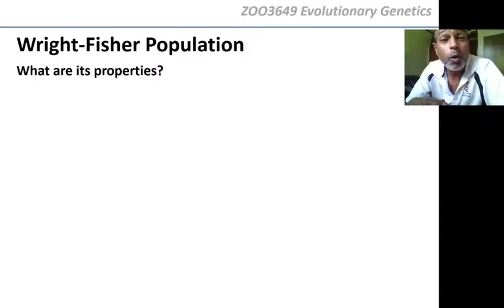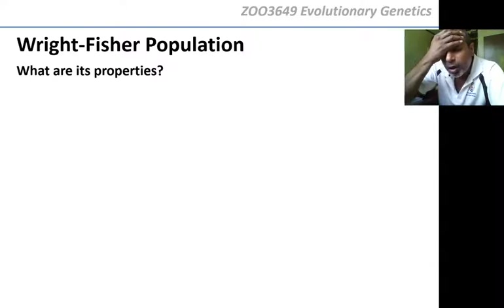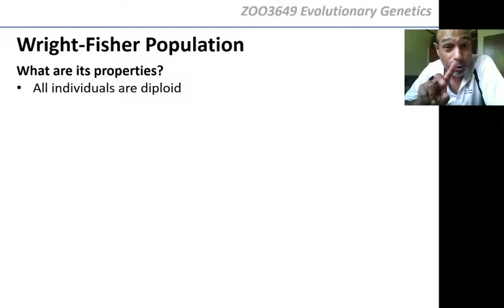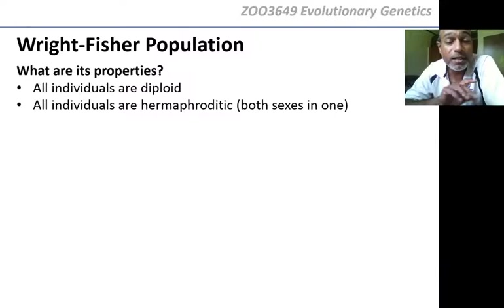When I ask you the properties of the Wright-Fisher population, you don't have to memorize — you've got to think: I need to get rid of all forces of evolution and keep only genetic drift. To make calculations simple, we idealize it. We're dealing with a diploid population, so each individual has two alleles, like you and me.